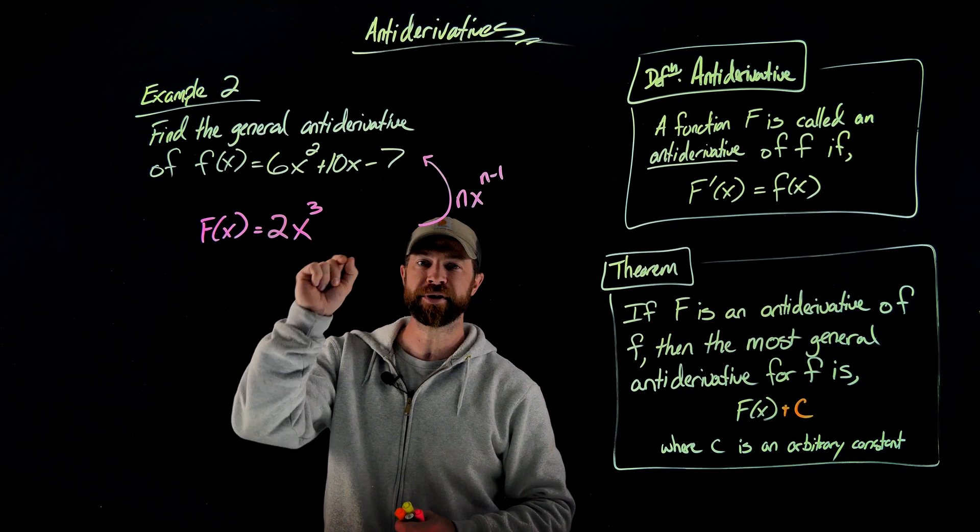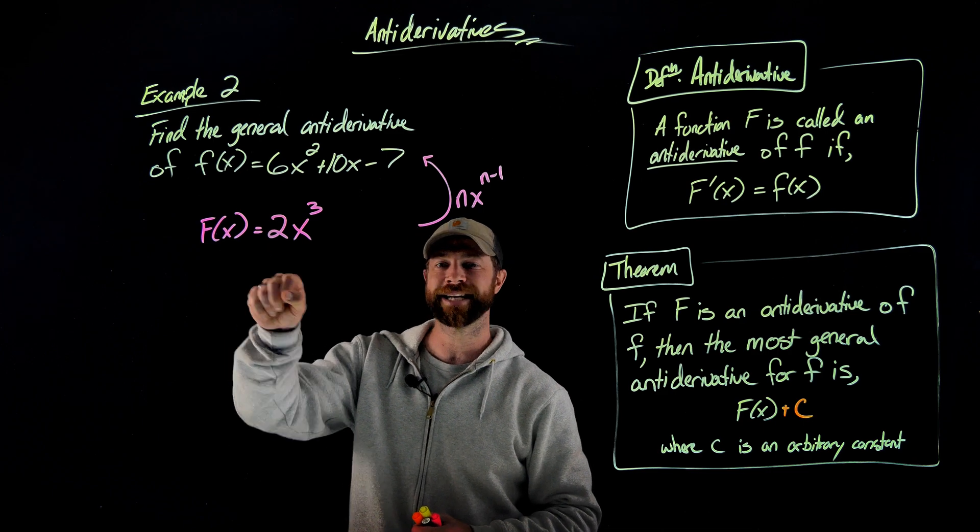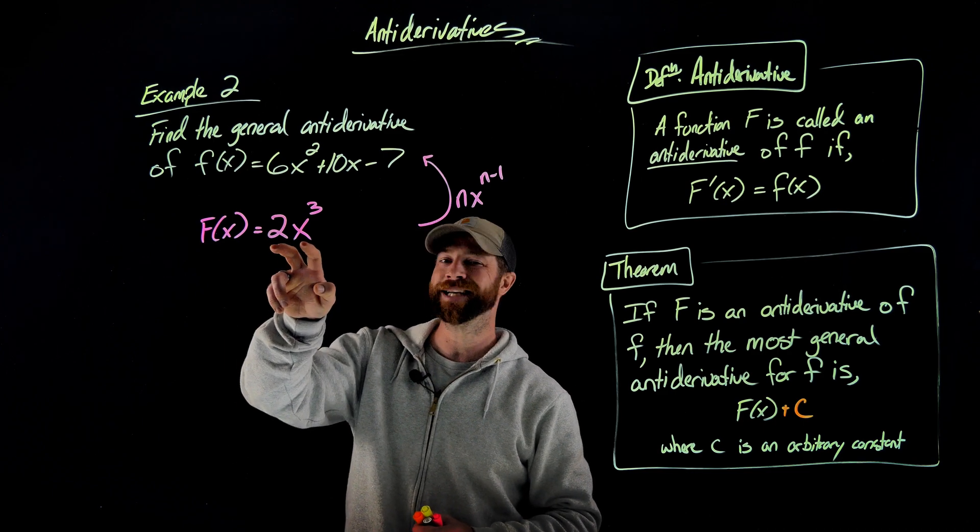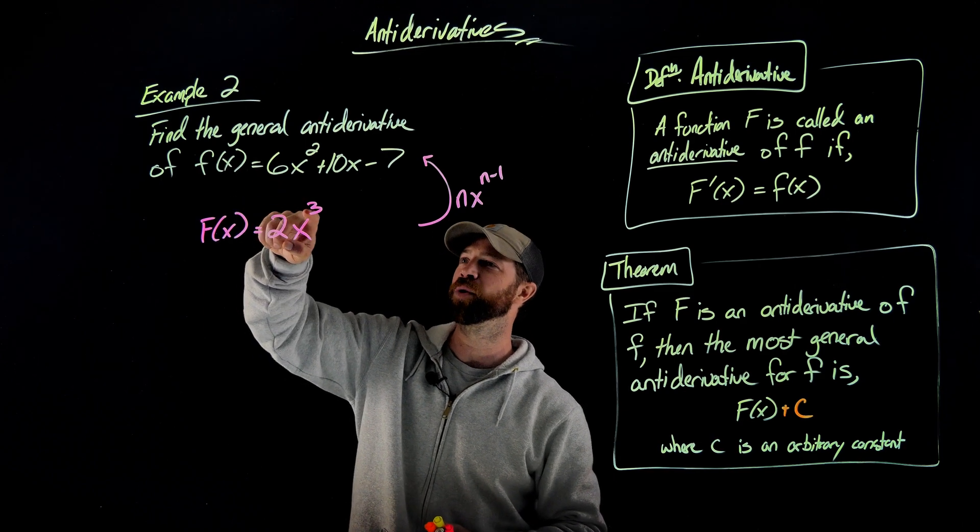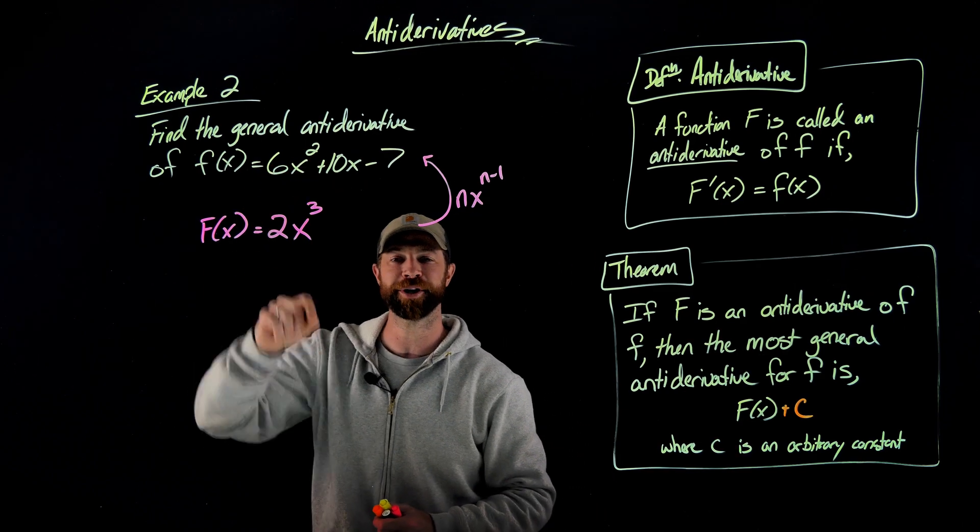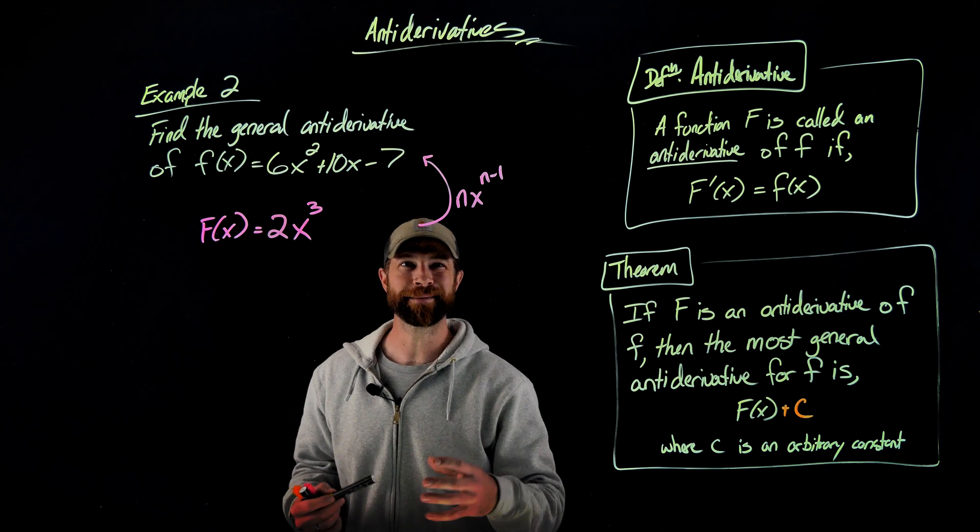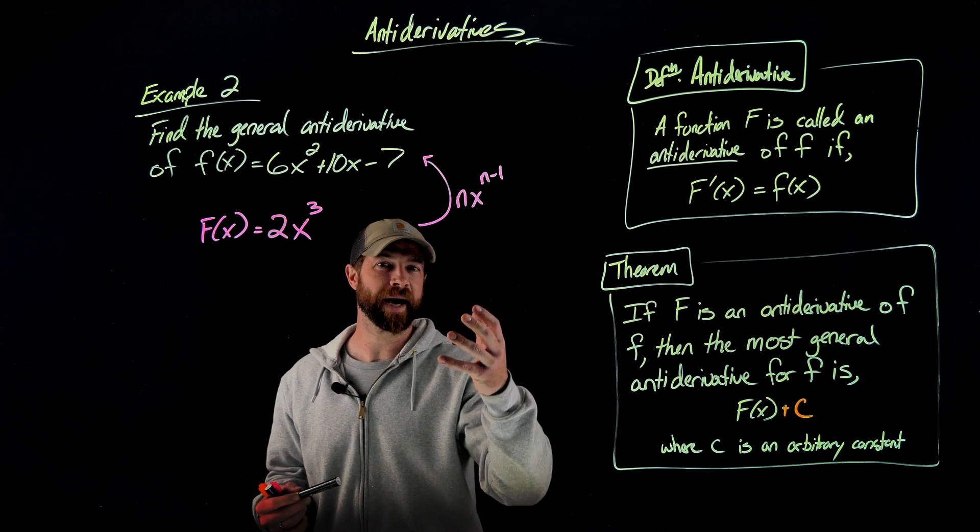In this case right here, this would be the first term for this antiderivative, because when I differentiate this term right here, I bring the 3 down, multiply it by 2, you get the 6, and then take 1 away from this exponent to make it an exponent of 2. That leads us to think about, well, then what is the opposite of the power rule?